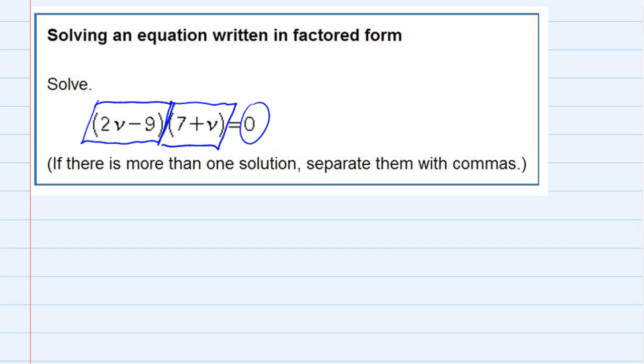So for this we use the zero product rule, which says that if you have things being multiplied and the result is zero, then one of those things being multiplied has to be zero. So we have two choices.